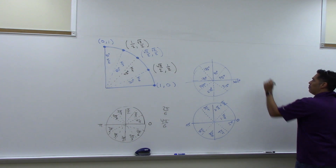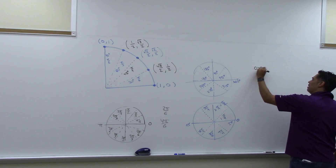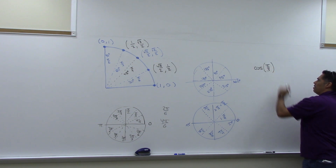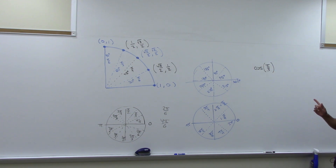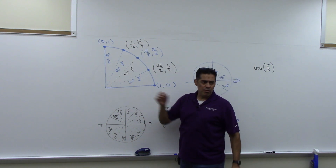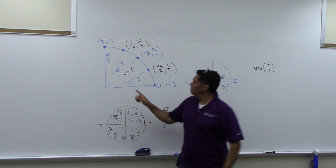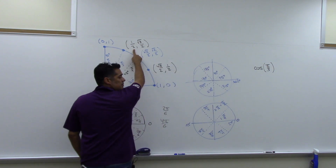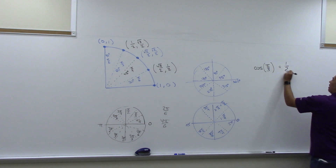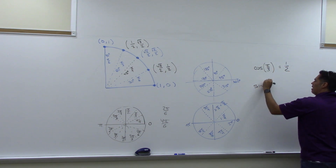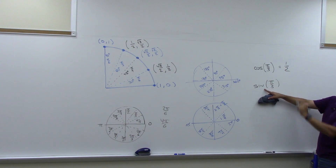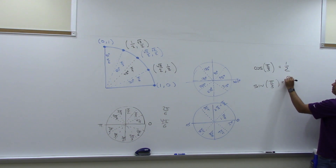Let's try some values. What's cosine of pi over 3? We go to pi over 3, and cosine is always the x-coordinate. At pi over 3 the x-coordinate is 1/2, so cosine of pi over 3 is 1/2. If we want sine of pi over 3, we want the y-coordinate at that same angle, which is root 3 over 2.